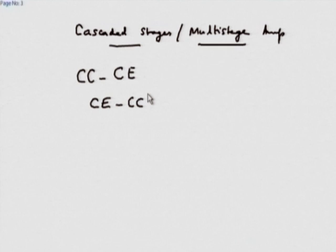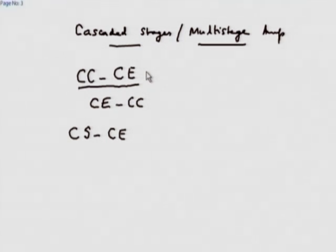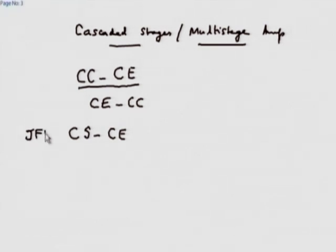There are many such combinations we can do. Interestingly, you can also think of other combinations — one such combination is a CS-CE cascade. We know that even though a common collector common emitter cascade gives fairly high input resistance, the input resistance is still not that high. If you are looking at an input resistance of say 1 megohm, you have to either go for a Darlington emitter follower at the input, or use a common source amplifier.